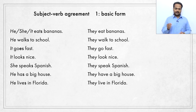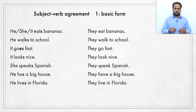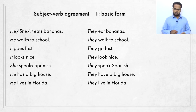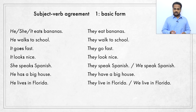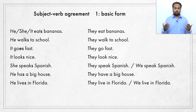Here are all the other sentences with the noun subject changed to a pronoun subject. Notice that you can refer to an animal like a monkey in the same way that you talk about a person — you can use he or she, or you can just say it. All of the plurals have been changed to they, but in some cases you can also have we. For example, if you're talking to the Spanish-speaking ladies, they can say 'we speak Spanish.' Similarly, if you're in a conversation with Mark and Anna, Mark might say 'we live in Florida.'